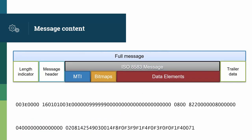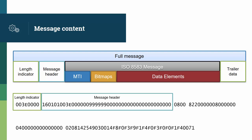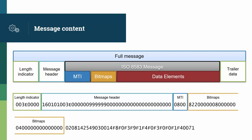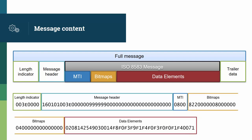Here is an example of a full message. It starts with a length indicator on 4 bytes, which indicates to the receiving system how many bytes of message to expect. It is followed by a message header, and then is the ISO 8583 message, starting with the message type identifier, followed by the bitmaps, which are themselves followed by the data elements. And in this case, there is no trailer data.